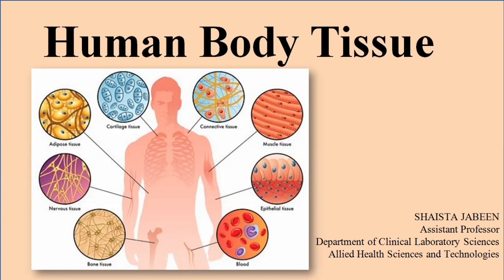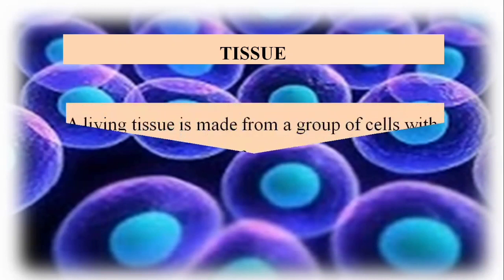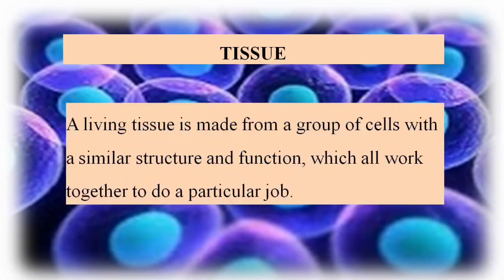This lecture is about human body tissue. The human body is made up of different types of cells. The cell is the basic fundamental unit of life, and the human body is composed of trillions of cells. When cells group together in an organized way, they form tissues, and tissues then form systems, which collectively form the human body.